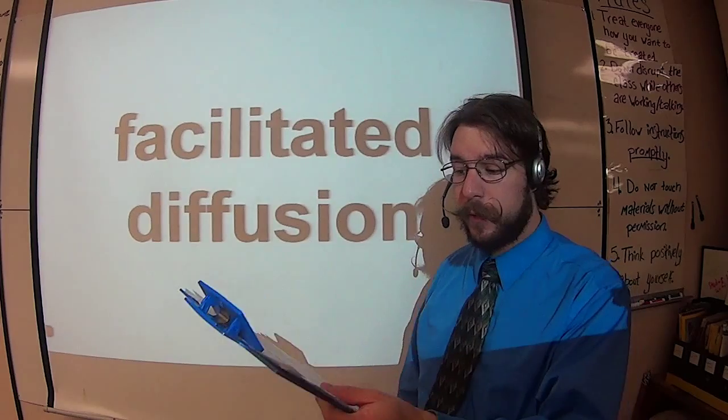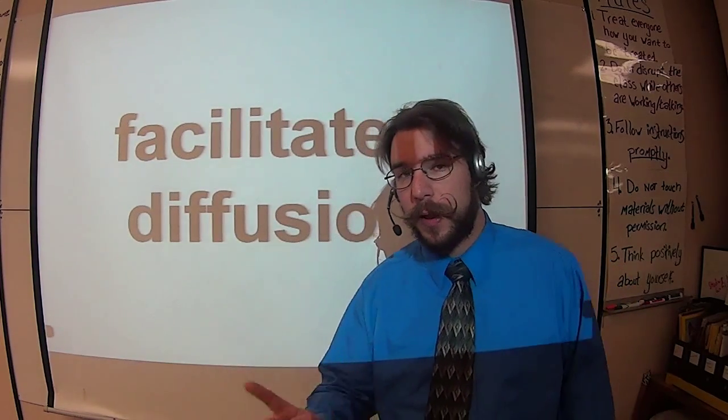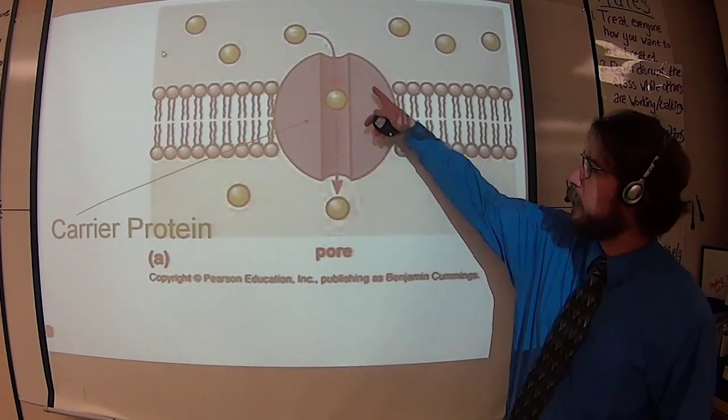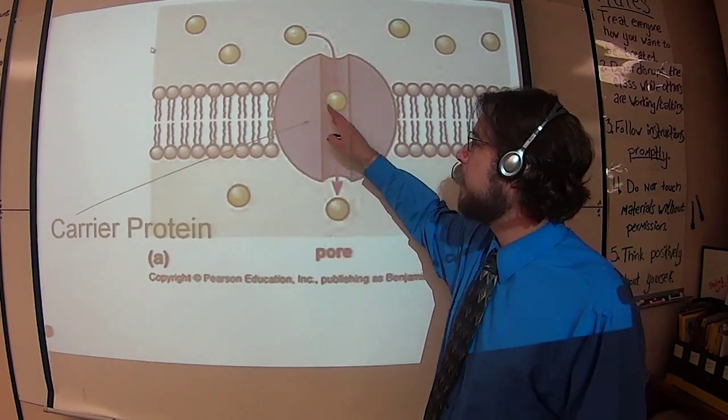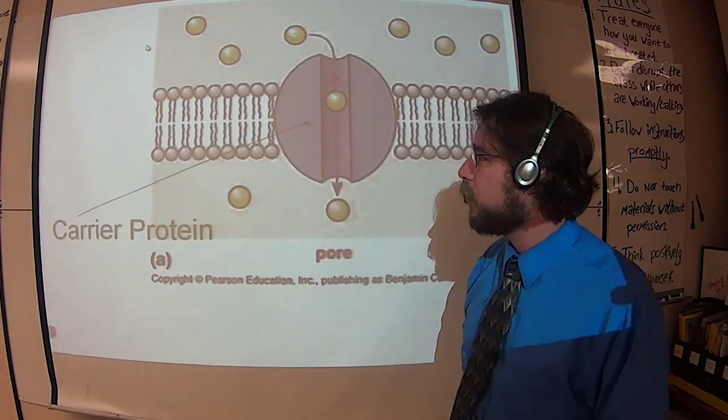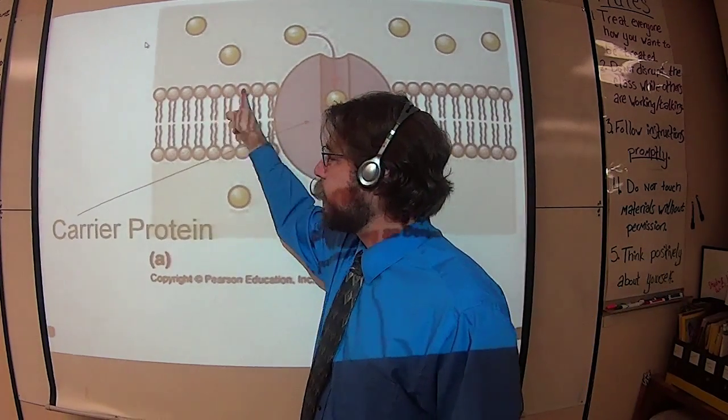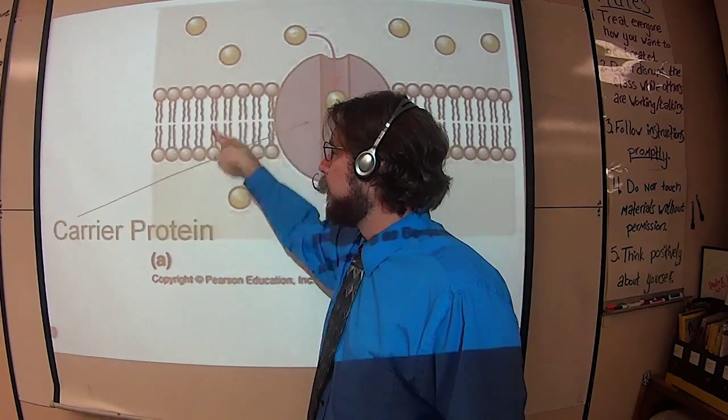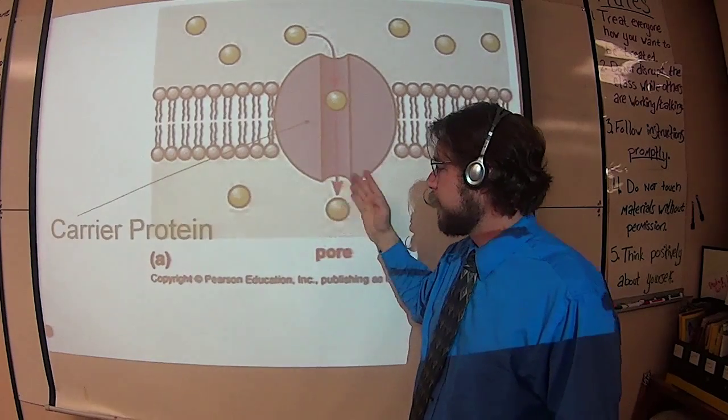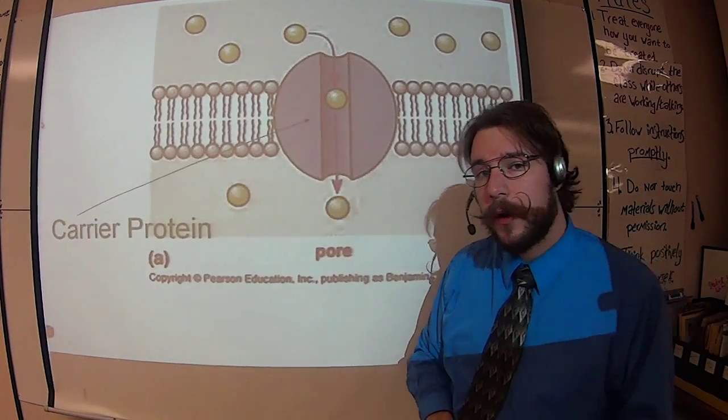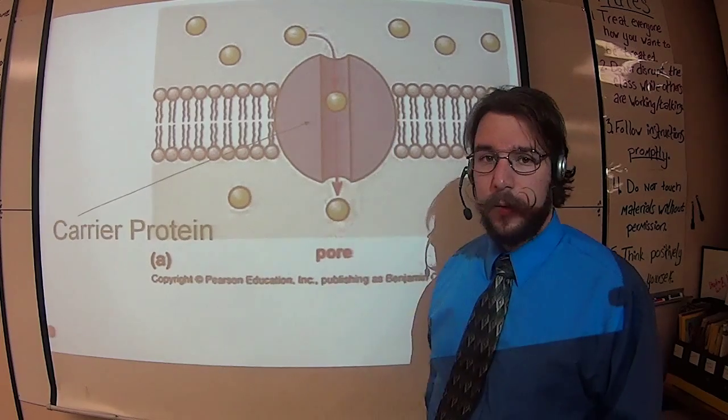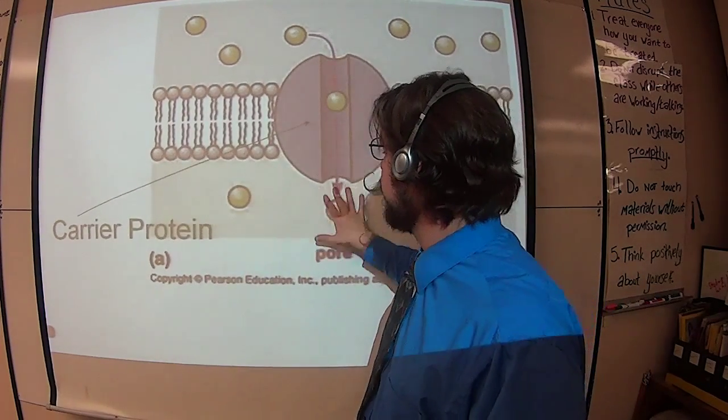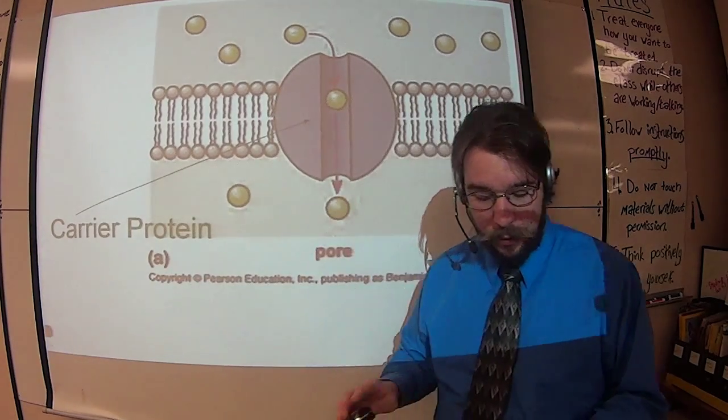This requires the use of a carrier protein and still follows the concentration gradient. Here's a nice picture - it's just a channel, letting the molecules flow right through. You can see this yellow thing, way too big to get through our phospholipid bilayer. Instead, it'll find this nice channel to go through. Water is actually a type of facilitated diffusion. We call it osmosis because it's water, but really it needs that channel. Anything that's really big is going to need that channel too.